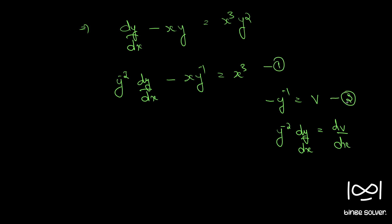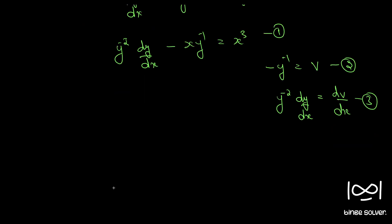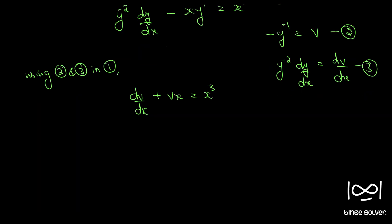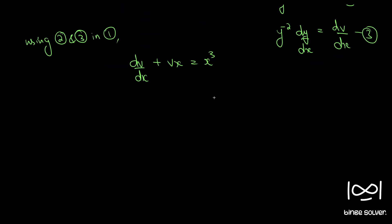This equation 2 and this equation 3. Now using equations 2 and 3 in 1, we have dv by dx plus vx is equal to x cube. This is a standard linear equation form: dv by dx plus pv equal to q.